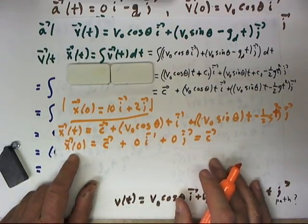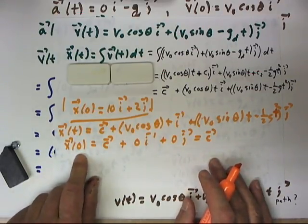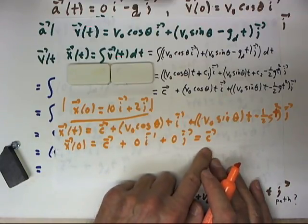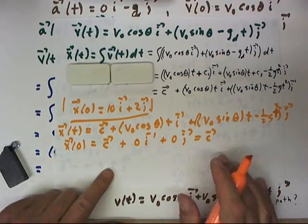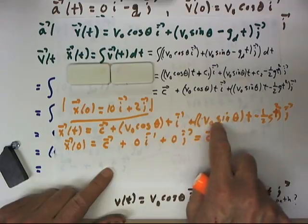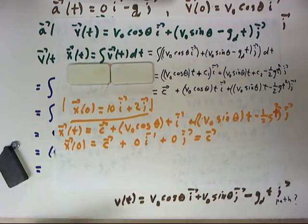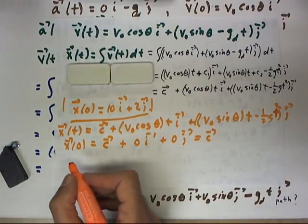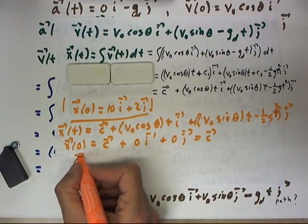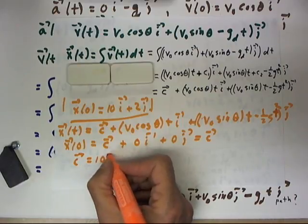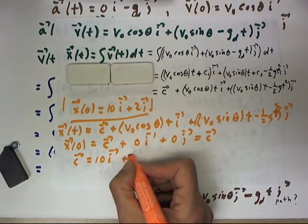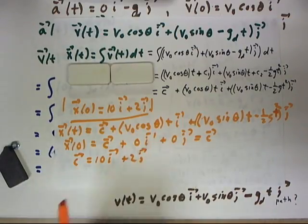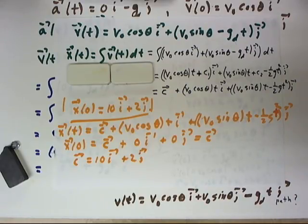Now it's not always going to turn out that our initial value is just equal to our integration constant. It's entirely possible that we get a function which evaluated at 0 is not 0. But in this case that's so.